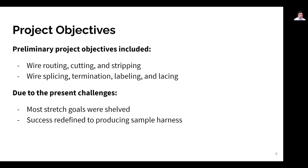Going a little bit deeper into our project objectives, we set the goals of developing a machine that would be capable of cutting and stripping, aka processing, wires, and routing them into a harness shape. We also had secondary goals of achieving wire splicing and termination into connectors, labeling, and lacing. Due to the present challenges of the COVID-19 pandemic, though, we renegotiated our goals with our sponsors and eventually set aside the secondary goals to be achieved in the future. And instead, we redefined success into proving our machine's capabilities by routing a sample harness.